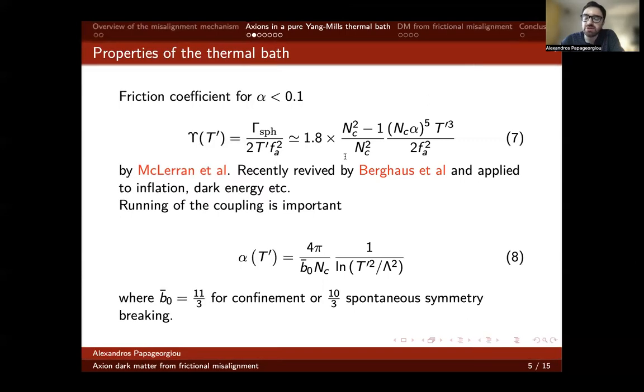The exact expression for the friction coefficient Υ is given by equation seven, which first appeared in the pioneering work of McLerran, Mottola and Shaposhnikov back in the early 90s. This idea was recently revived by Berghaus, Karwal and Graham, who applied this thermal friction idea for modifying inflation, dark energy and early dark energy. Inspired by this work, we decided to use this thermal friction to explore possible modifications to the axion misalignment mechanism for non-thermal generation of axion dark matter.